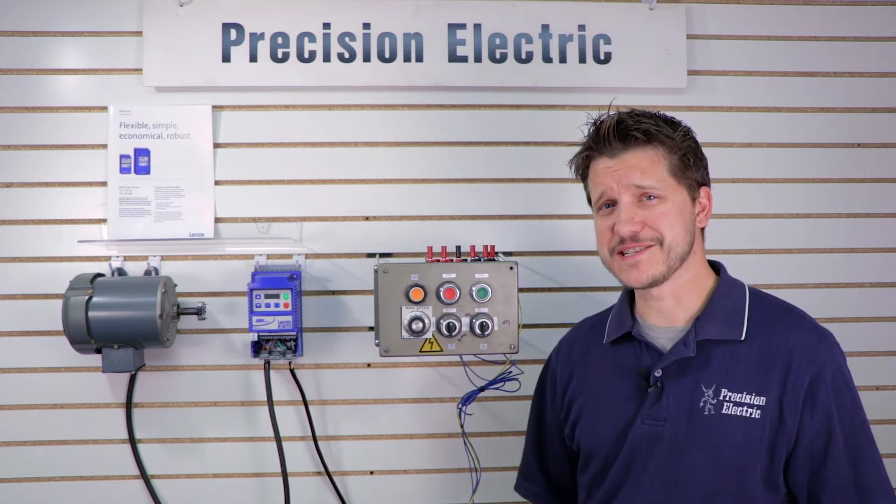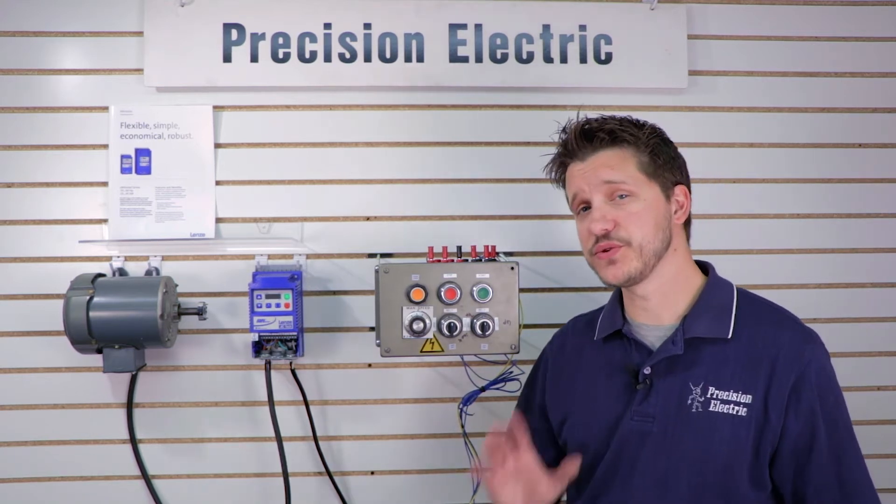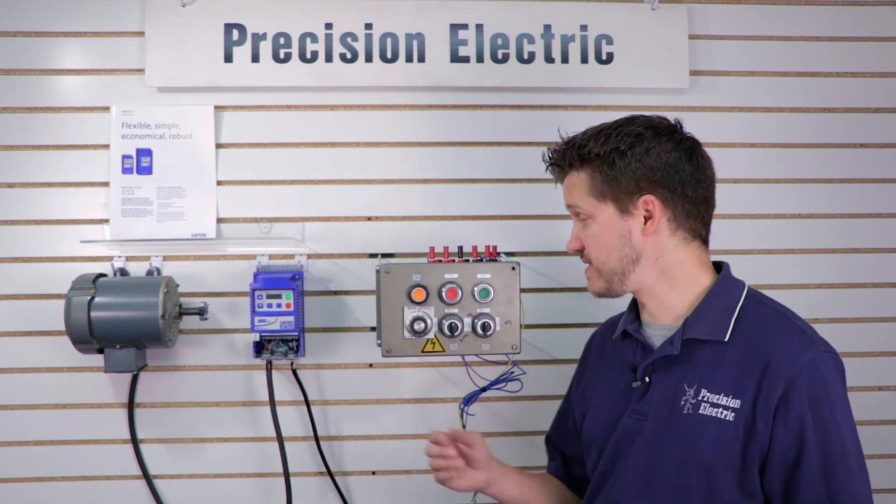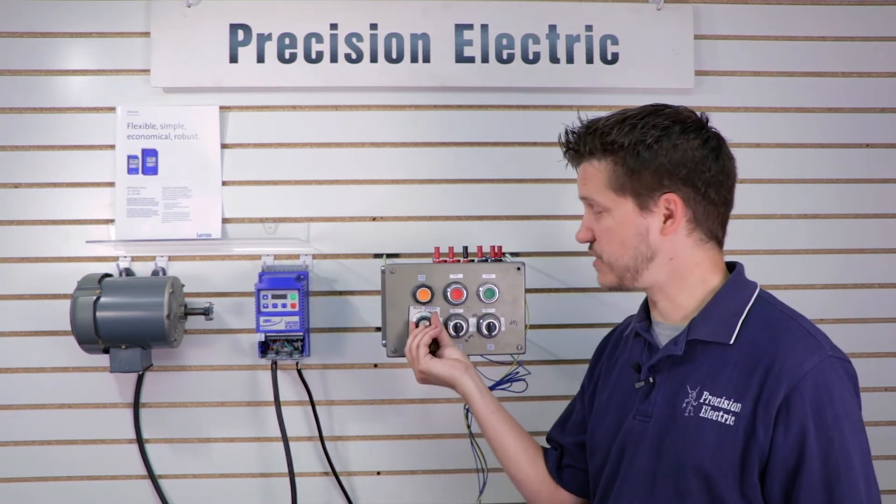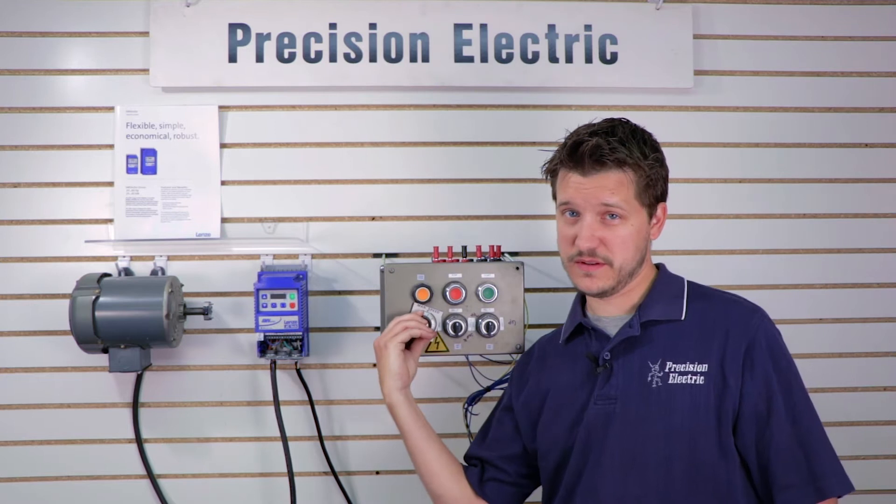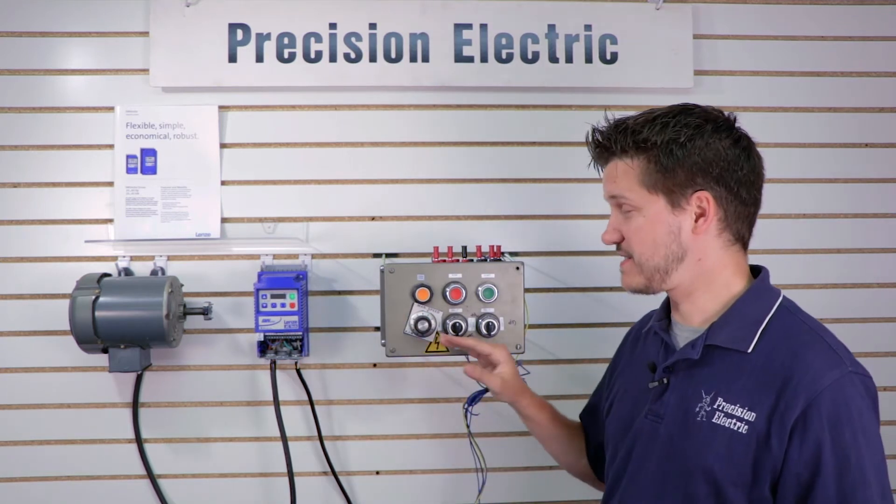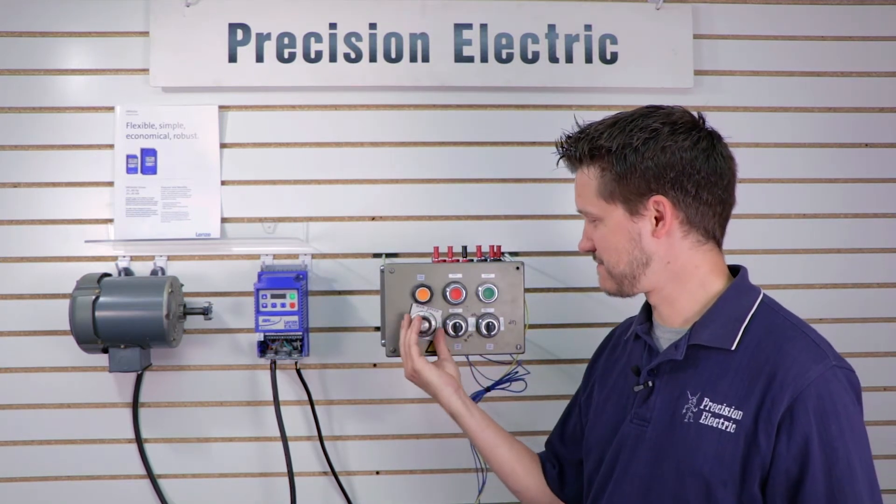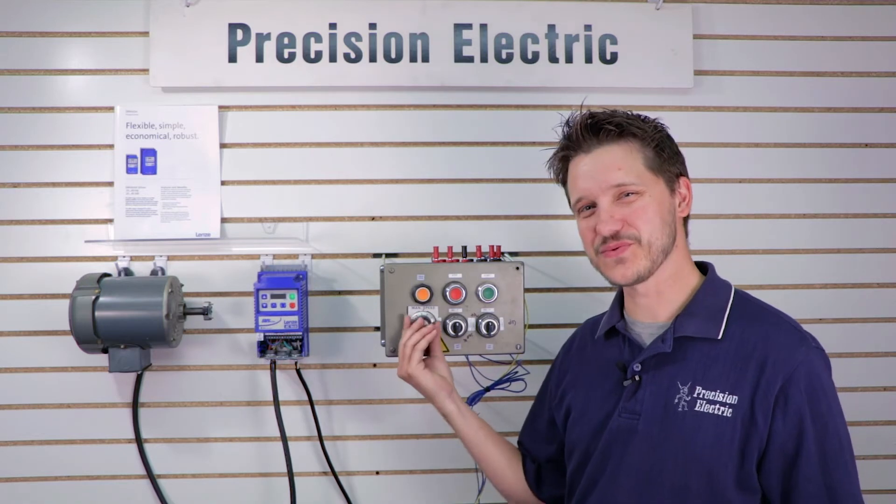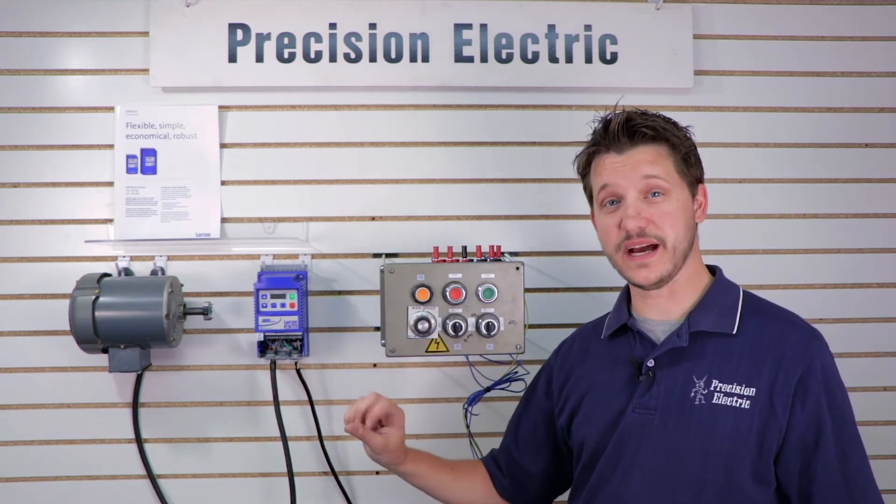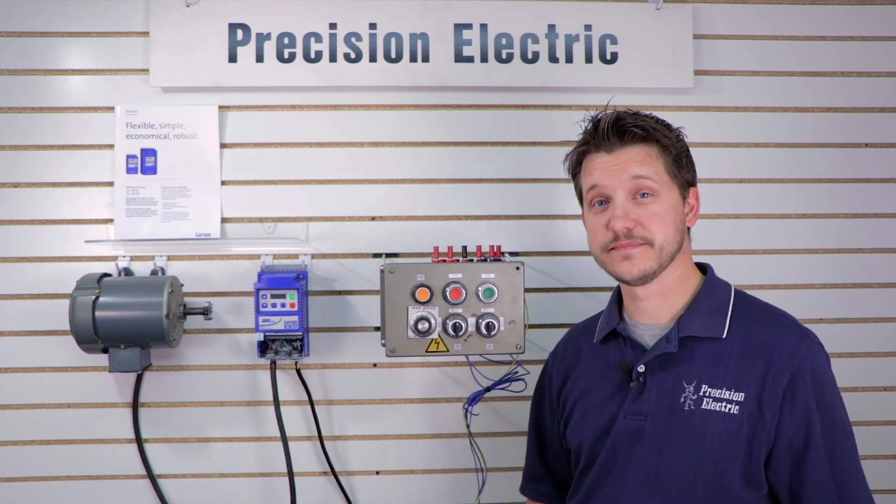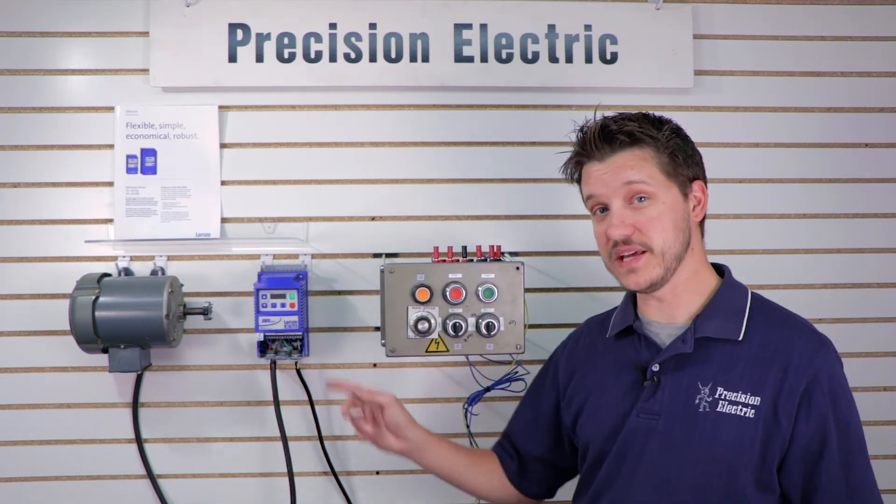So today's video is going to cover the speed potentiometer. For those of you who don't know what a speed potentiometer is, it's basically like one of these knobs that you can turn to adjust your speed. What we want to do is wire this knob to the drive so that we can adjust our speed up and down and essentially use this instead of the keypad.